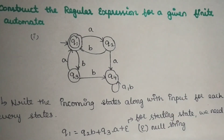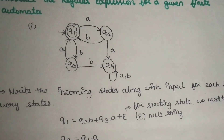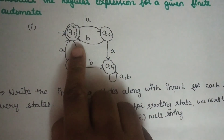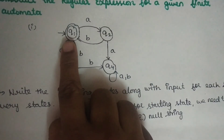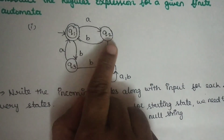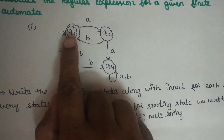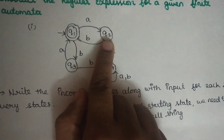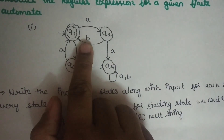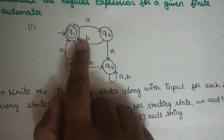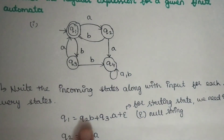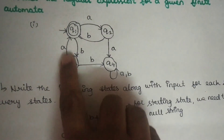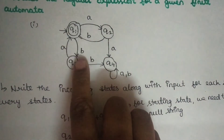How do you form equations? In each state, you look at the incoming input. Look at the state — what is the incoming input? In Q2, B is the incoming input. Look at Q1 to Q2 — B is the incoming input. Look at Q3 — Q1 is the incoming input with A as the incoming input.